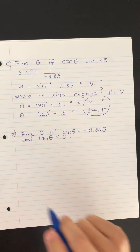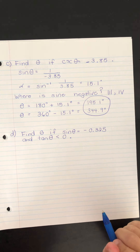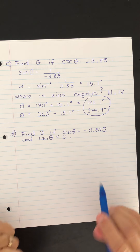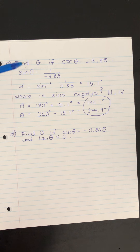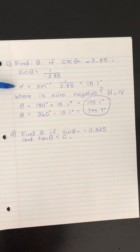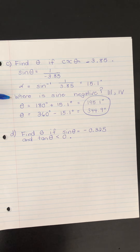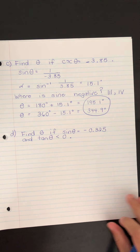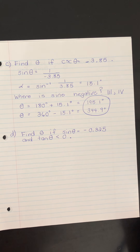When you do your unit test, it is very important that you show all of your steps, because you will get part marks for the calculation of that acute angle alpha, for posing the correct question, for coming up with the correct quadrants, and then for the final answers. Please make sure you show all of your work for your unit test.